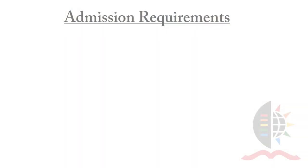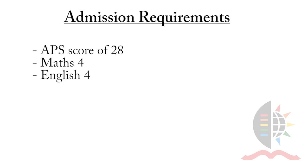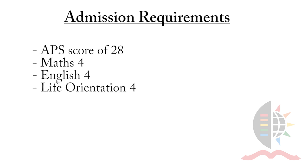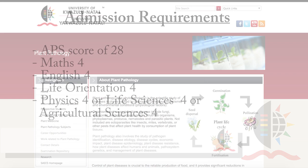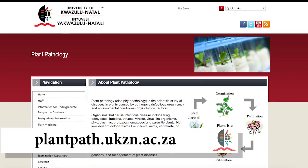To study plant pathology at UKZN, a minimum APS score of 28 points is required with maths, English, life orientation, and either physics, life science, or agricultural science. Visit our website for more information.